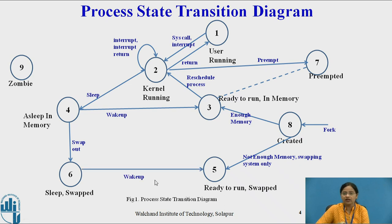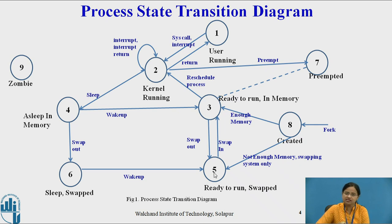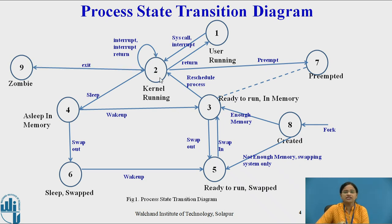After completion of the event, the process wakes up and enters state 5 — ready to run but swapped — because there is not enough space in memory. When space becomes available, the process is swapped into state 3, the kernel schedules it, and it enters kernel running mode again. Similarly, ready-to-run processes that are swapped out enter state 5 and are swapped back into state 3 when memory is available. Eventually, while executing in kernel running mode, a process may execute the exit system call and enter the zombie state — the last state — where the process does not exist but leaves its statistics for its parent process.